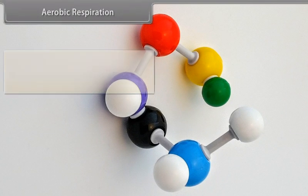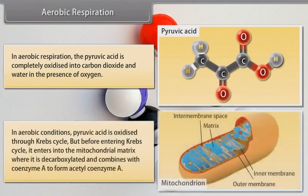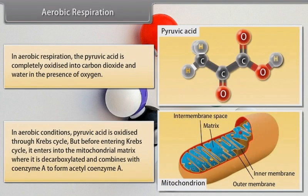In aerobic respiration, pyruvic acid is completely oxidized into carbon dioxide and water in the presence of oxygen. In aerobic conditions, pyruvic acid is oxidized through the Krebs cycle, but before entering the Krebs cycle, it enters into the mitochondrial matrix where it is decarboxylated and combines with coenzyme A to form acetyl coenzyme A.